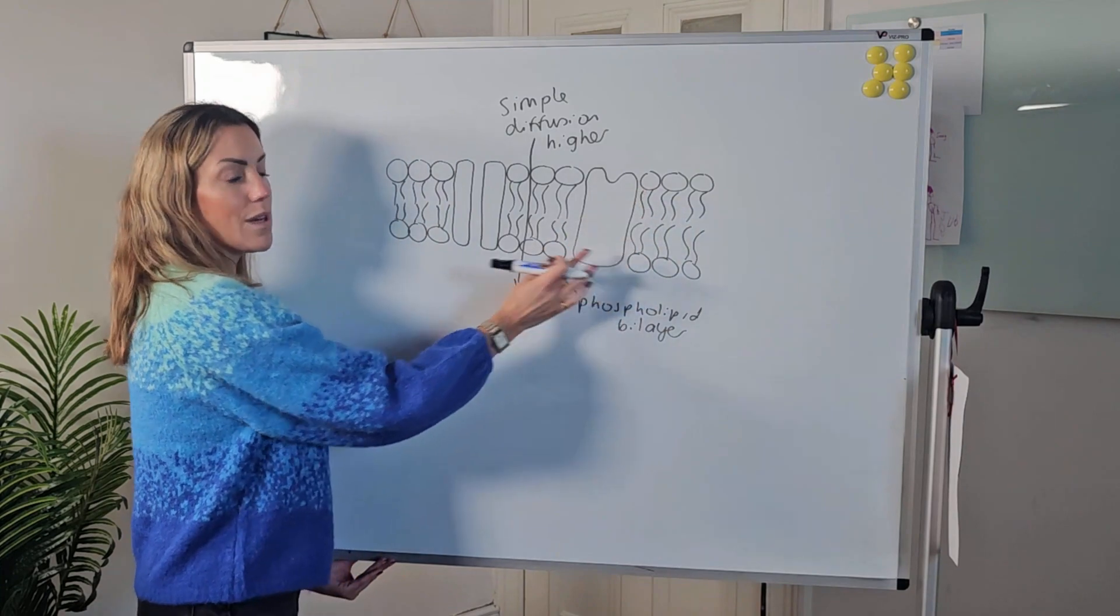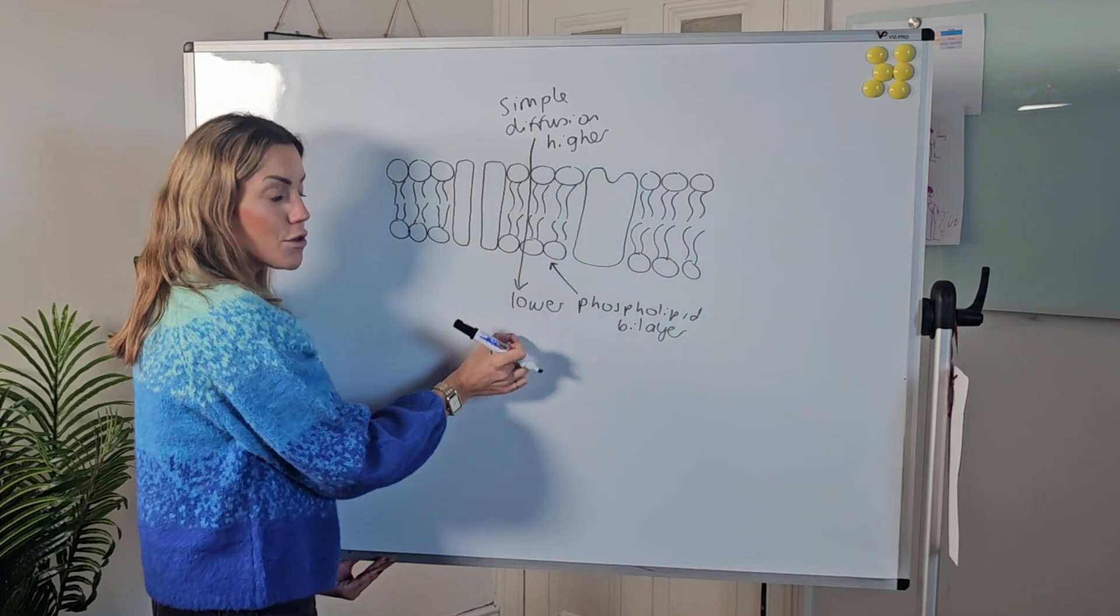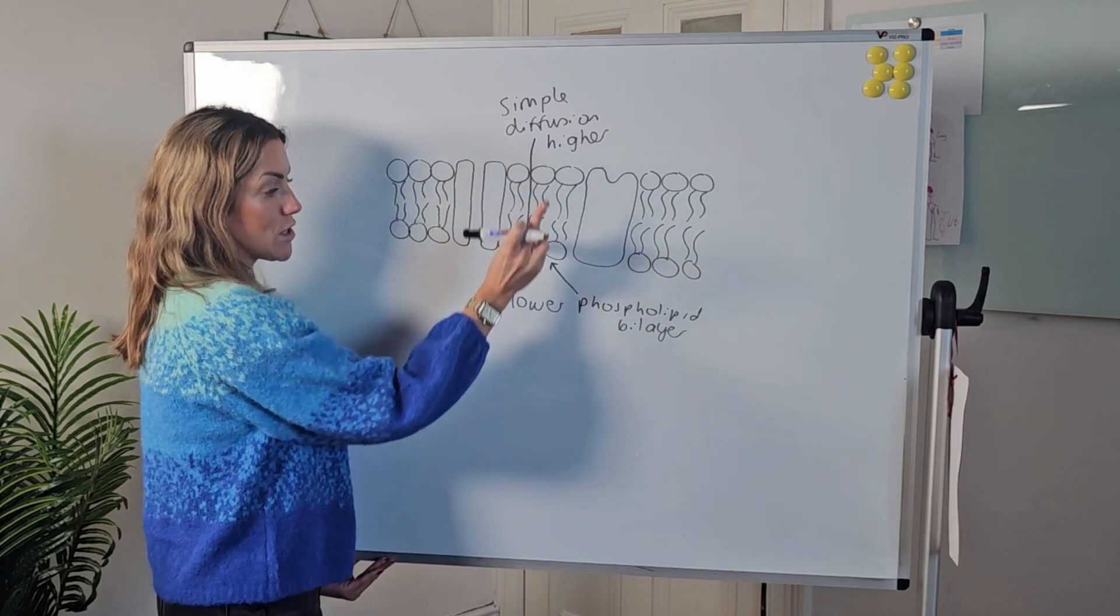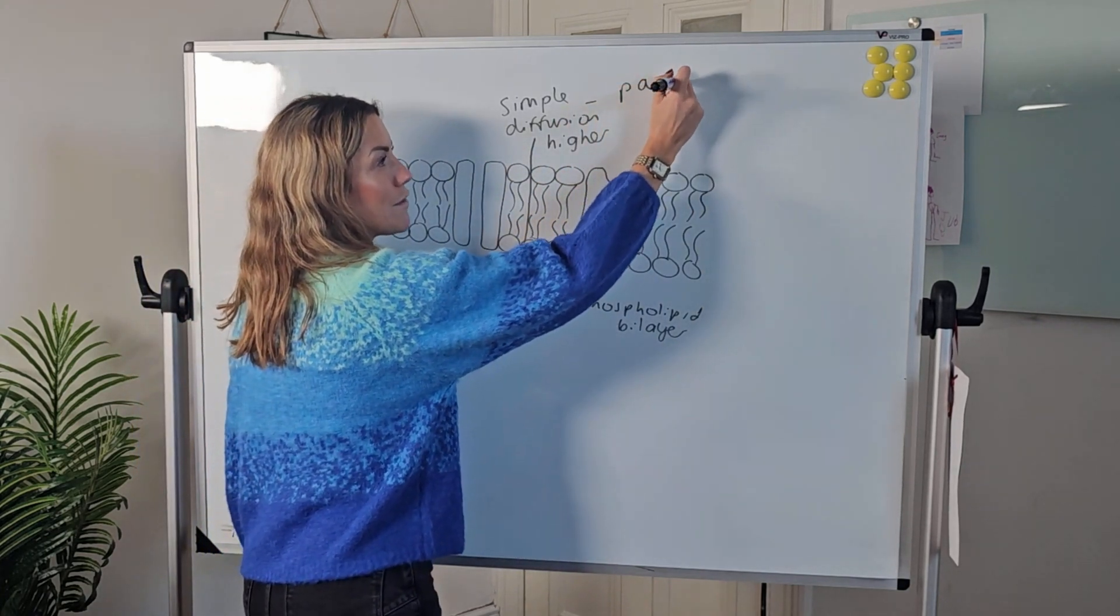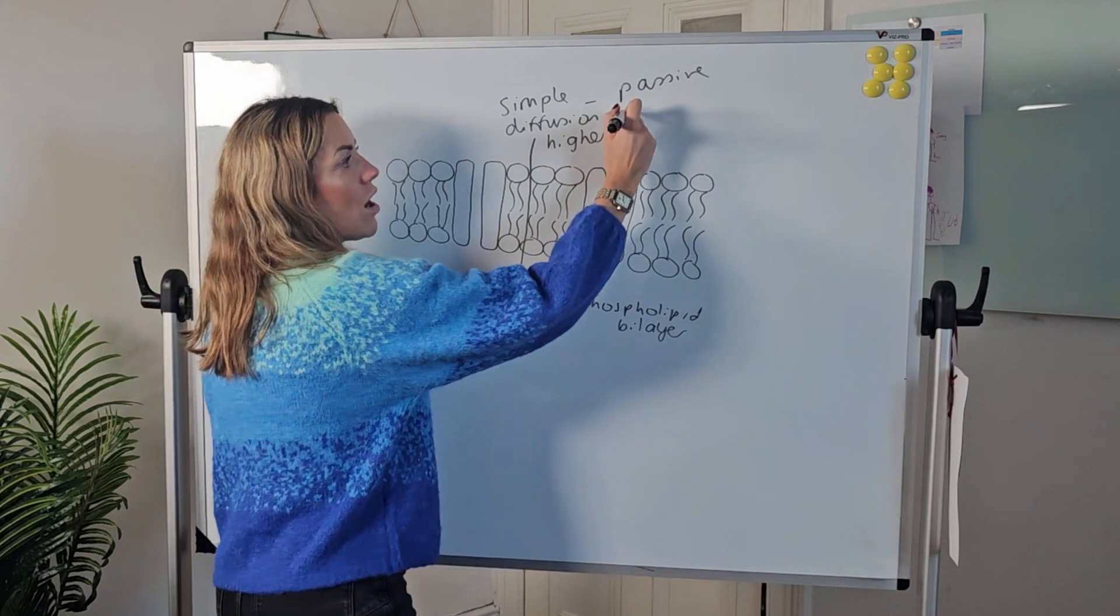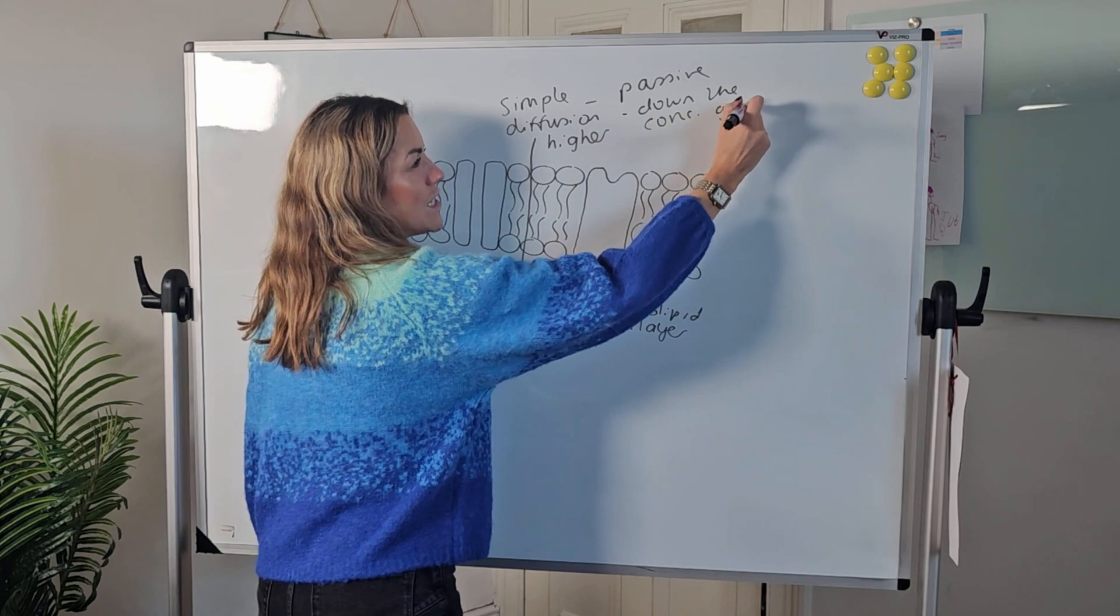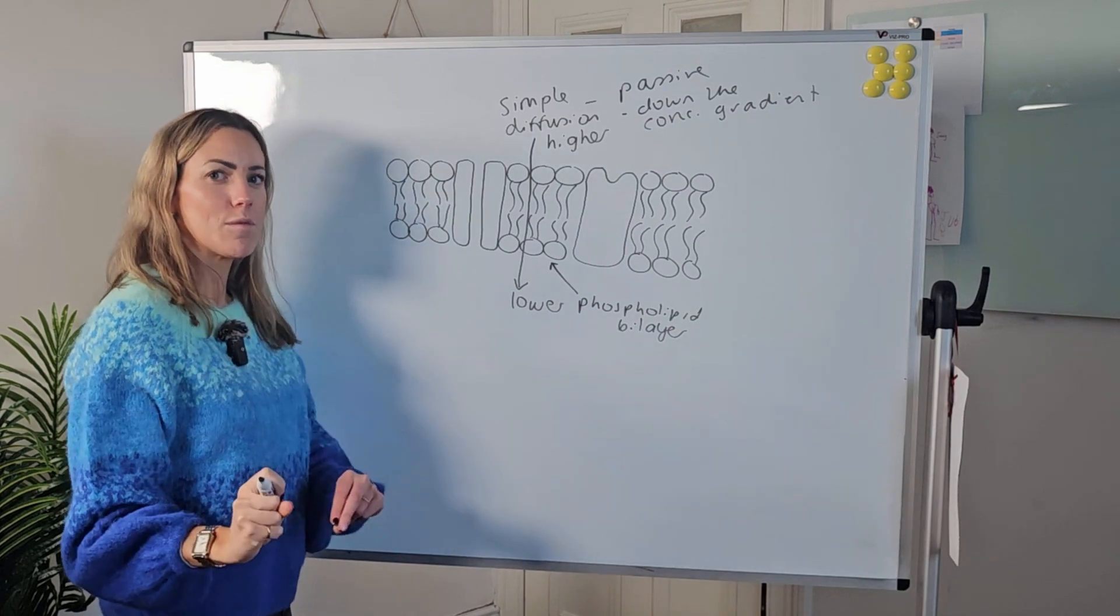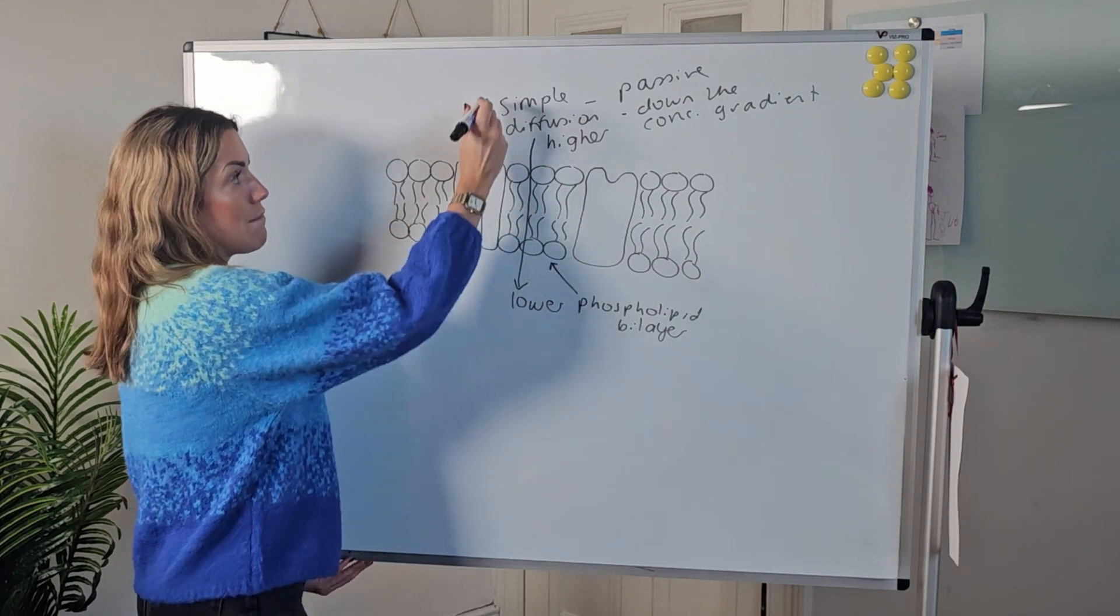So I've got my two layers of phospholipids. Simple diffusion means the substance is diffusing through the phospholipid bilayer itself from a region of higher concentration to a region of lower concentration. It is passive, which means it doesn't require energy or ATP, and we are moving the substances down the concentration gradient. But this can only be used for certain types of substances because only certain substances are able to pass through the phospholipid bilayer.